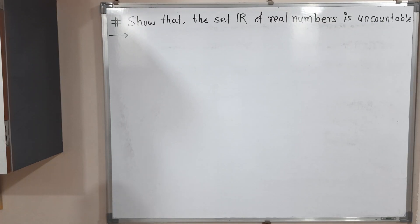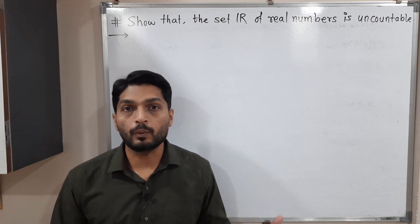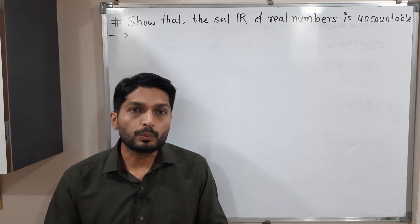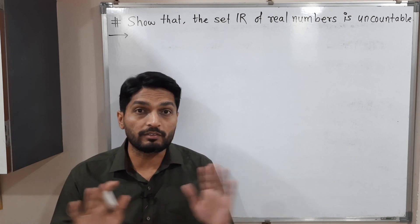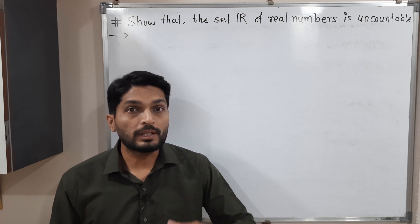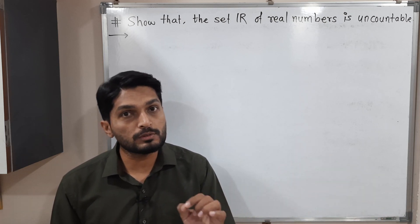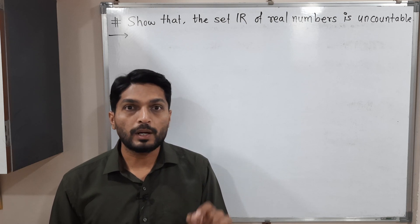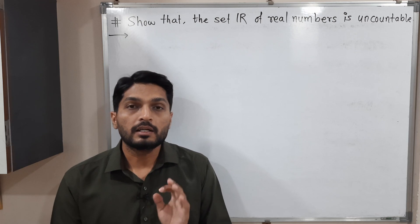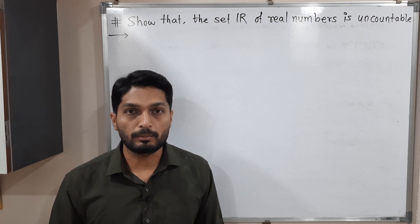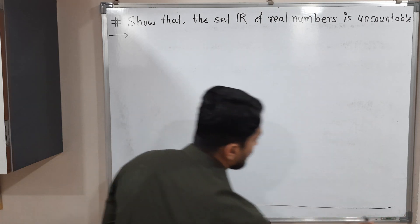In this video we are going to prove that R is uncountable. Countable means we can count the elements — first, second, third, fourth — that means we can use proper numbering: x1, x2, x3, x4, x5, and so on. Then we say the set is countable. Here we have to prove that R is uncountable, so I am drawing the real line R here.